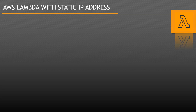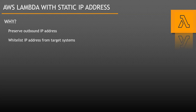Welcome to this video on configuring Lambda functions with a static IP address. Before we start, let's understand why we need this. A very common scenario is when you have to provide a static IP to whitelist from external systems. If your application runs on Lambda and you want to integrate with external systems, they will likely need a static IP address to whitelist so you can access their application and proceed with your integration.